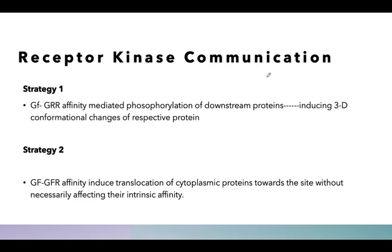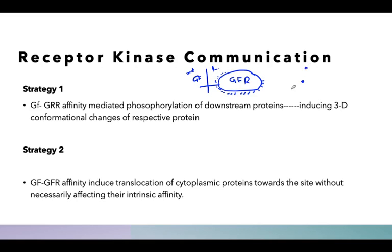There are two strategies that have been proposed. Upon activation of the growth factor receptor — indicated here by small dots — and upon its exposure with a growth factor outside the cell, the growth factor communicates. In strategy one, it brings about a promiscuous, irrespective protein phosphorylation to a different range and kinds of proteins present in the cytoplasm. These proteins, upon phosphorylation, bring up a structural conformational change, conveying the message that the cell needs to divide or proliferate further.